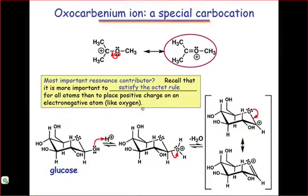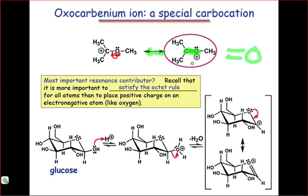The oxocarbenium ion is a special, resonance-stabilized carbocation that we will encounter in studies of carbohydrate chemistry. The resonant structure with a double bond isn't just the most important resonant structure in this molecule because it gives every atom an octet — it also illustrates nicely the reactivity of the oxocarbenium. Notice the similarity between the carbonyl group and the resonant structure at right of the oxocarbenium. Just like the carbonyl, the carbon is the most electrophilic atom in the oxocarbenium ion, and thus the most ready to accept electrons from a nucleophile. Resonant stabilization makes the oxocarbenium ion a very reasonable reactive intermediate to propose.